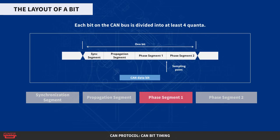The phase segments may be shortened — phase segment one — or lengthened — phase segment two — if necessary, to keep the clocks in sync. The bus levels are sampled at the border between phase segment one and phase segment two.